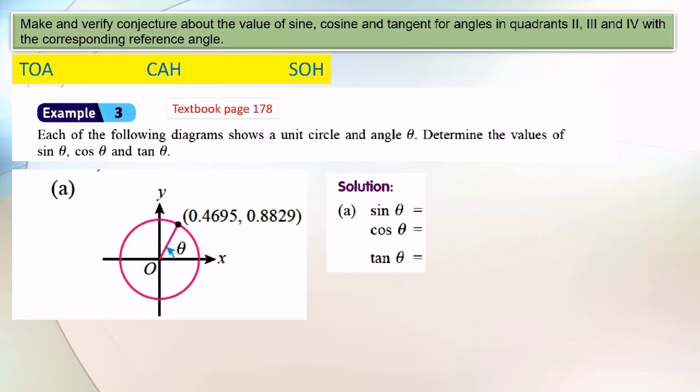Now we look at example 3. Each of the following diagrams shows a unit circle and angle theta. Determine the values of sine theta, cosine theta, and tangent theta. So you know what is a unit circle? Unit circle is a circle with radius 1 unit and center at the origin.